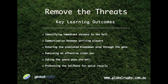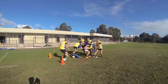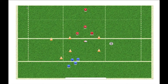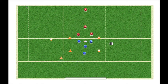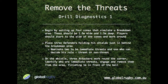And protecting the halfback for a quick recycle. Here's how this one looks in the classroom. Begin by setting up four cones that simulate a breakdown area — these should be 1.5 meters wide and 1.5 meters deep.